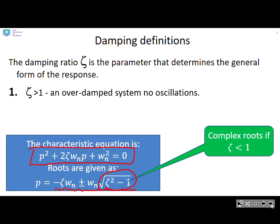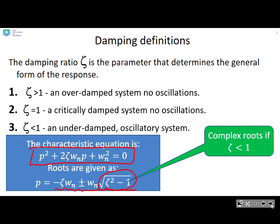So what do we get? If ζ is bigger than 1 you have real roots, you have an overdamped system and no oscillations. If ζ equals 1 you have a critically damped system and no oscillations. And if ζ is less than 1 you have an underdamped system with complex roots and you will have oscillation. And this is the case that this video is going to focus on.